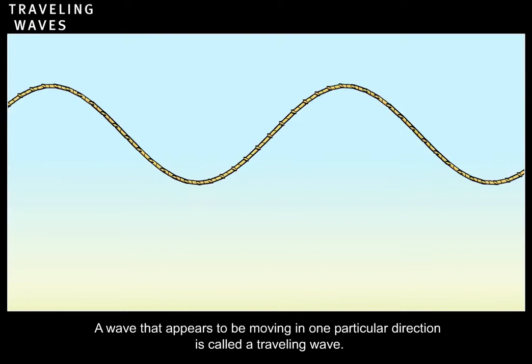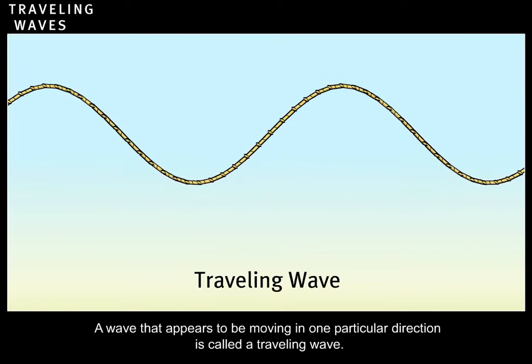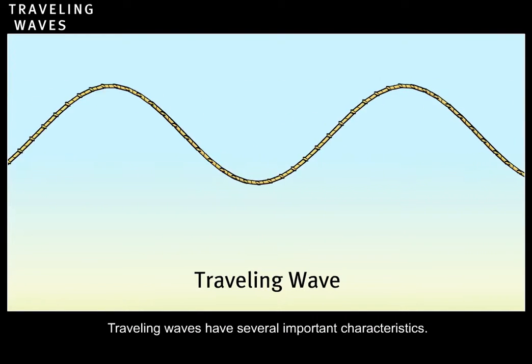A wave that appears to be moving in one particular direction is called a traveling wave. Traveling waves have several important characteristics.